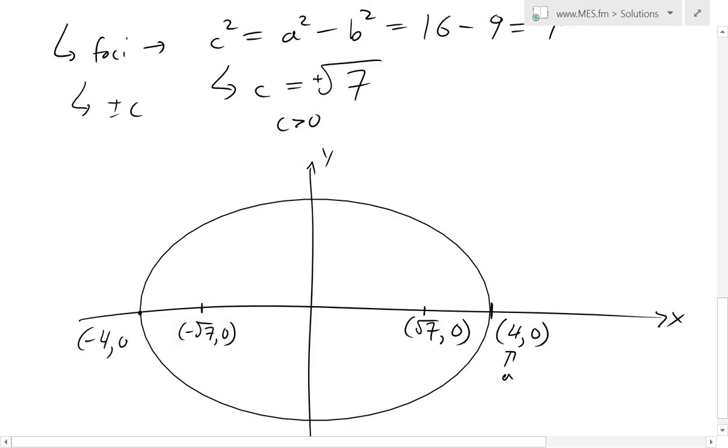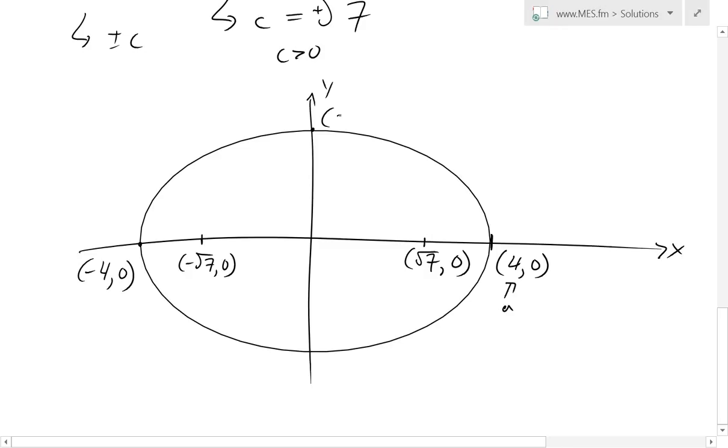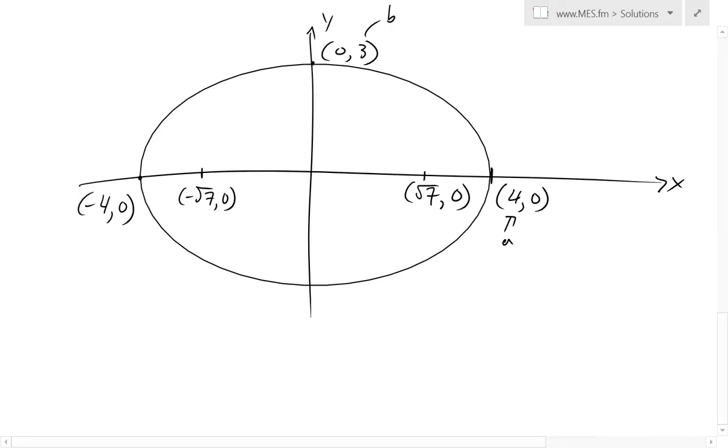And then the top, this is equal to, well, 0, and this is our b, which is 3, and again, that's just b. And then the bottom right here is going to be 0 and negative 3.